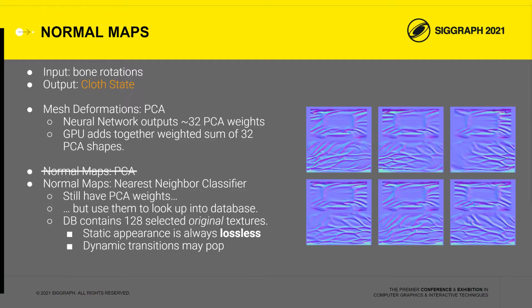With this method, the static appearance of the normal map always exactly matches one of the source textures. This makes screenshots look good, but in motion there is an obvious pop when switching from one normal map to another. To deal with this, we use a simple temporal filter, where the new selection is blended into the last few frames' results. This masks the pop well enough that it is not visible in normal gameplay, only becoming noticeable if the characters animate very slowly from pose to pose, such as in instant replay.